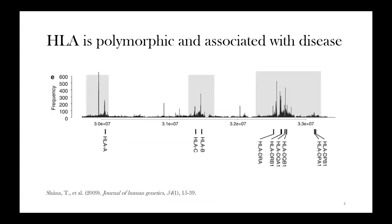On the y-axis here is a measure of sequence diversity across the human population, and on the x-axis is the position along the genome. As you can see, the HLA genes are some of the most diverse genes in the human genome, with the three class 1 genes comprising 25,000 known alleles.